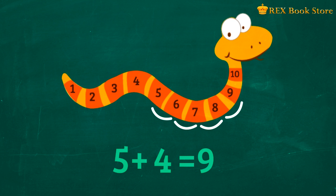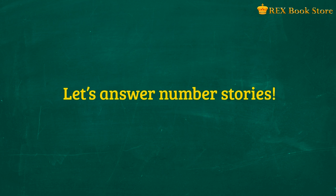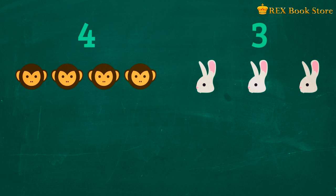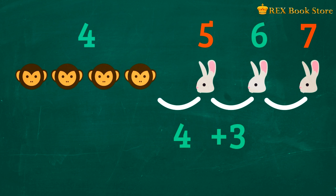Now do it on your own. One plus blank is equal to six. Did you get five? That's awesome. Now we can move on to number stories. Ann has four stickers. She buys three more stickers. Can you tell me how many stickers she has all in all? Four plus three equals seven. Ann has seven stickers in all.